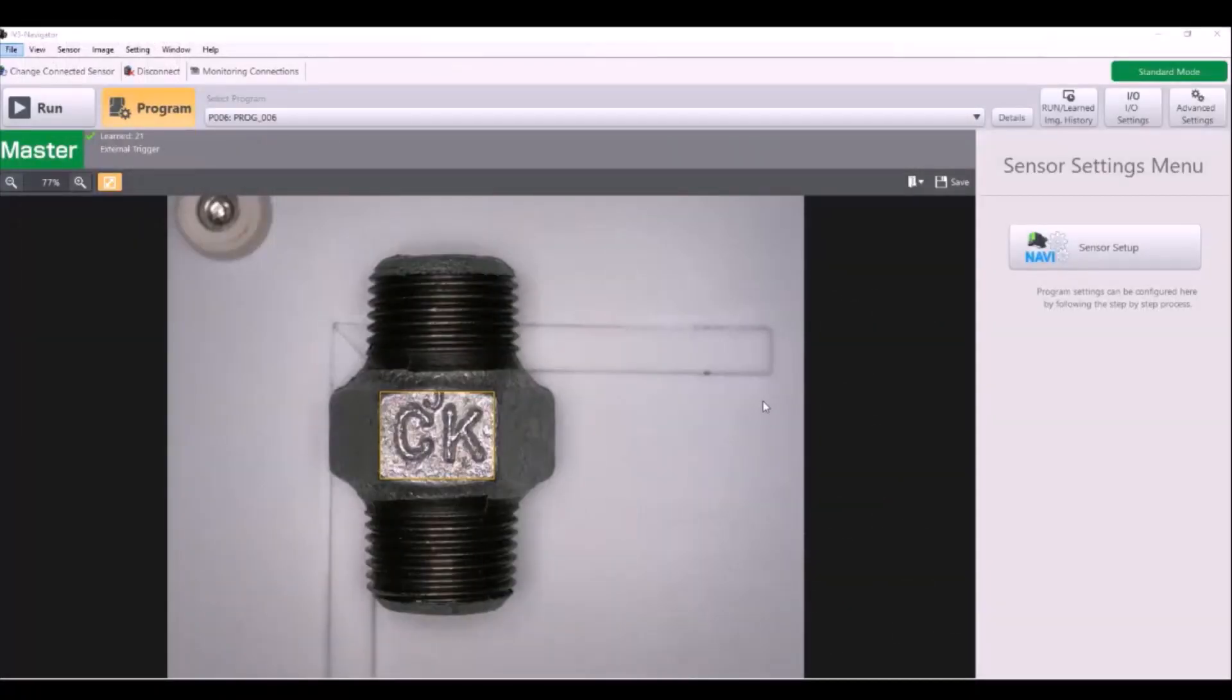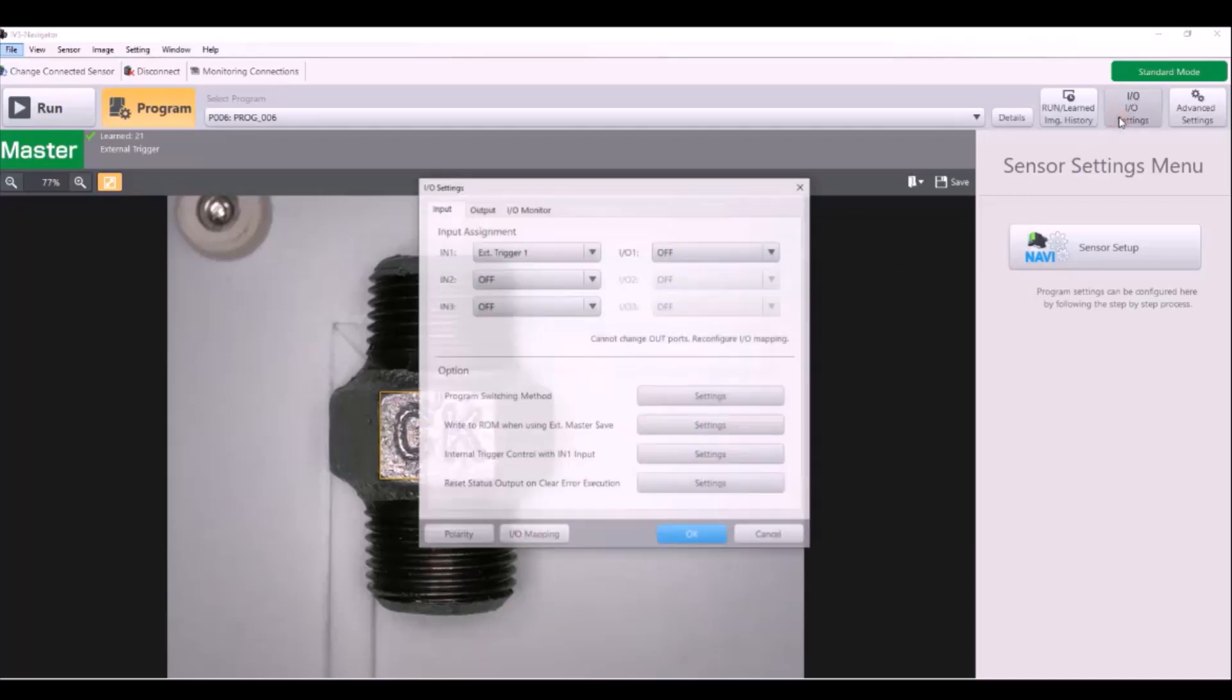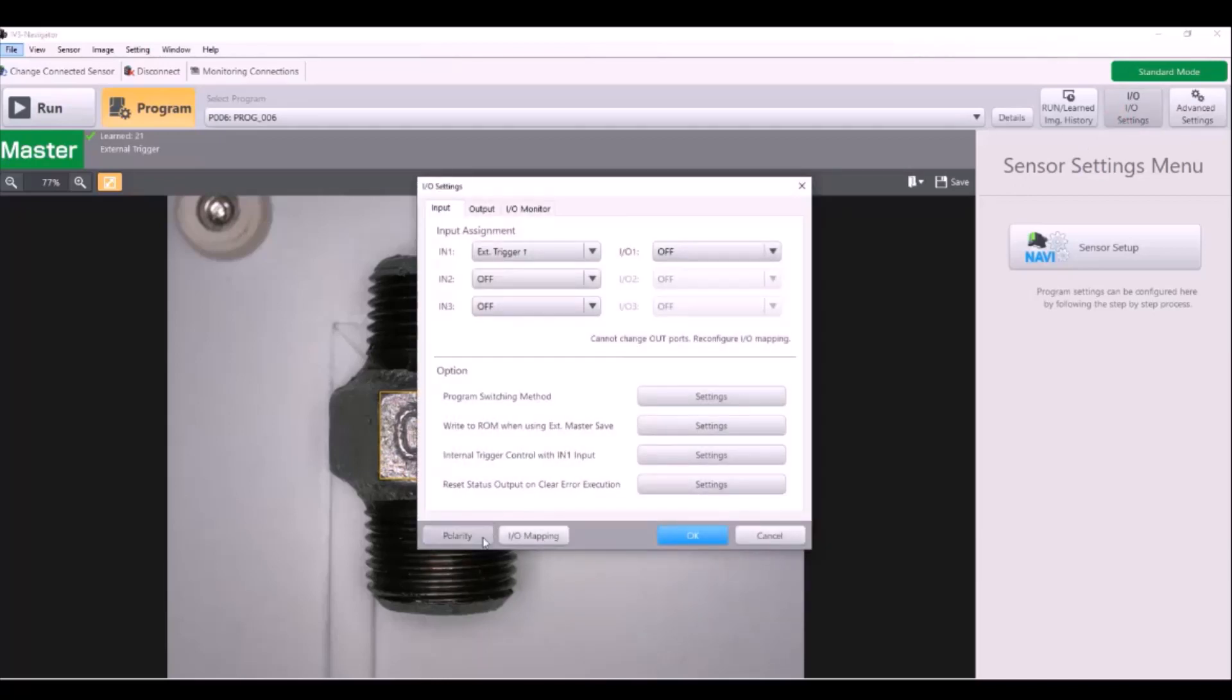Lastly, we just need to change the polarity in the software. Going into I/O settings and adjusting that to NPN.